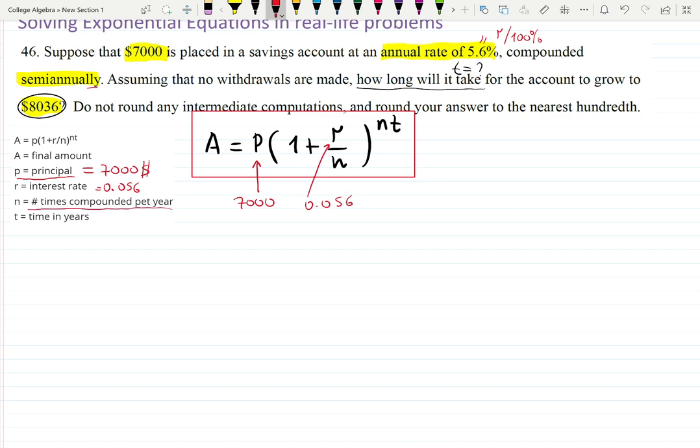We've figured out r is 0.056. n is the number of times compounded per year, and if it says semi-annually, then n is 2, twice per year. So n is 2 over here and n is 2 over here.